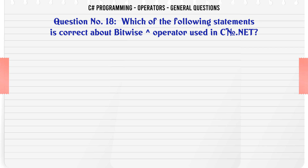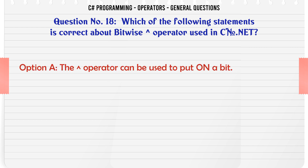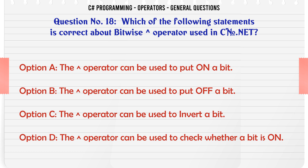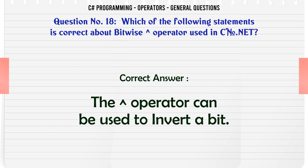Which of the following statements is correct about the bitwise operator used in C.NET? A: The operator can be used to put on a bit. B: The operator can be used to put off a bit. C: The operator can be used to invert a bit. D: The operator can be used to check whether a bit is on. The correct answer is: the operator can be used to invert a bit.